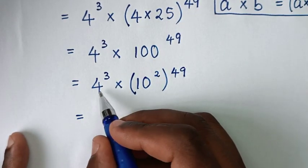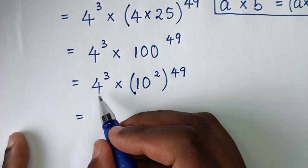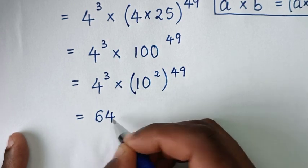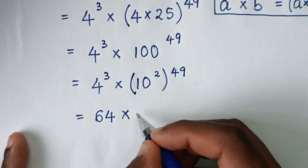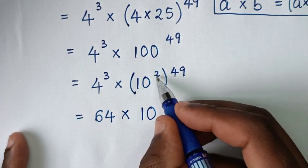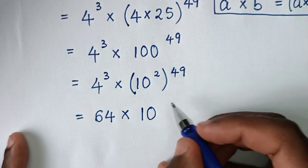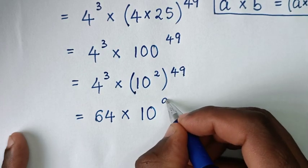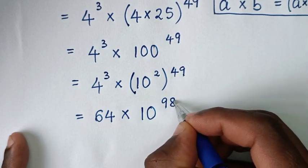From here, 4 power of 3 is the same as 4 times 4 times 4, which is 64. Then times 10 power of 2 times 49, which is power of 98.